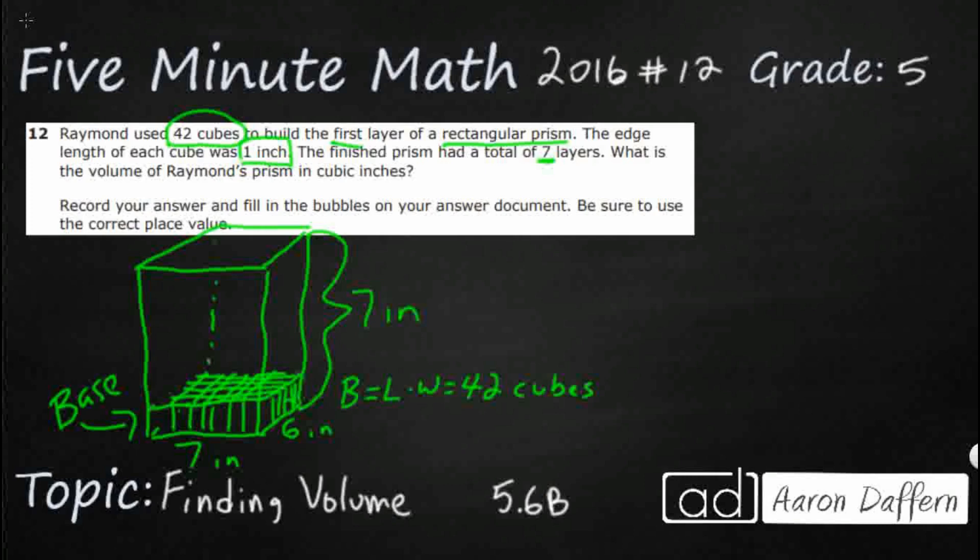So this brings us back to one of our, there's many different volume formulas, but one of the volume formulas that we're going to use is volume equals base times height. You can also use volume equal length times width times height. Then when you get into cylinders, pyramids, those have all different volume formulas. But for rectangular prism, one of the ones we're going to use is this base times height.